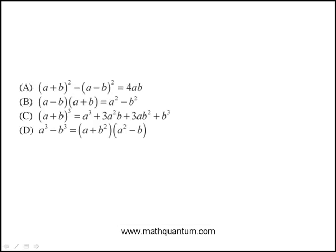So here we have to identify the statement that is not true for all real numbers A and B. Let's look at some of the familiar ones. I see the difference of squares. Yes, this is true for all values of A and B. So that one is out.